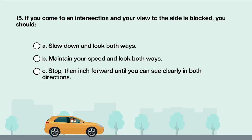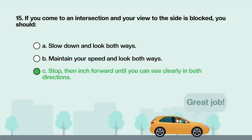If you come to an intersection and your view to the side is blocked, you should: A. Slow down and look both ways. B. Maintain your speed and look both ways. C. Stop, then inch forward until you can see clearly in both directions. Answer is C: Stop, then inch forward until you can see clearly in both directions.